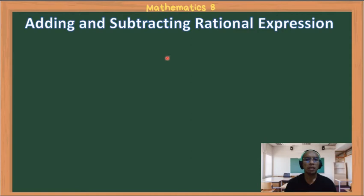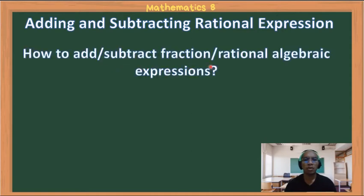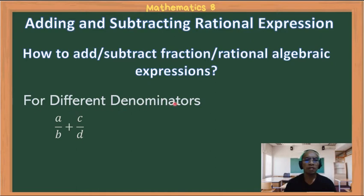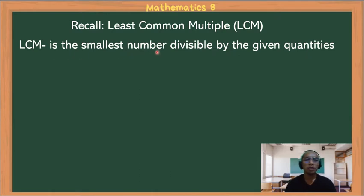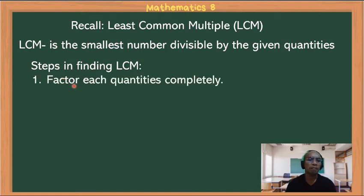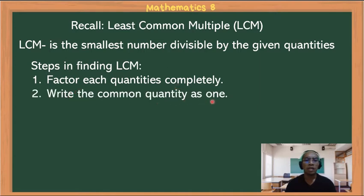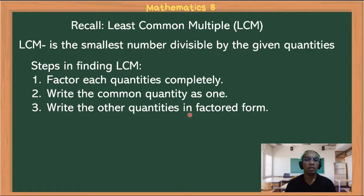Adding and subtracting rational expressions: how to add or subtract fractions or rational algebraic expressions with different denominators, like a over b plus c over d. We have to recall the concept of least common multiple, or LCM — the smallest number divisible by the given quantities. Steps: first, factor each quantity completely; then write common quantities as 1; write other quantities in factored form; then multiply them to get the LCM.